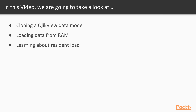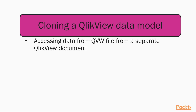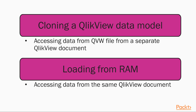We will describe yet another way of reading source tables, but this time the source will be ClickView itself. There are different cases in which this approach will prove useful, and we will describe two scenarios. The first is accessing data already stored in a ClickView data model — that is, a QVW file — from a separate ClickView document. The second is accessing data from the same ClickView document in which the data model resides, which we will call loading from RAM.